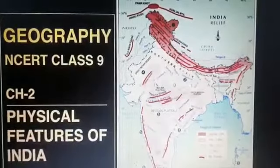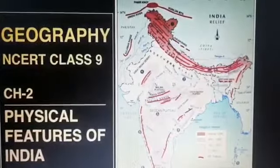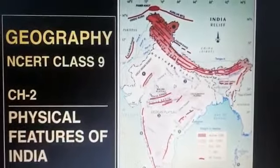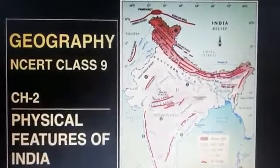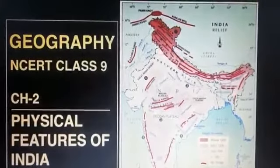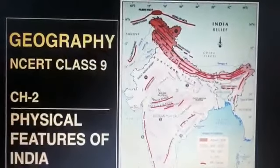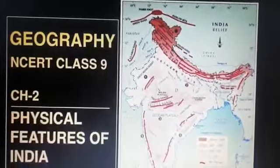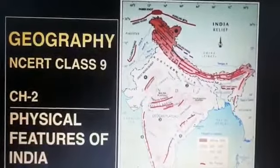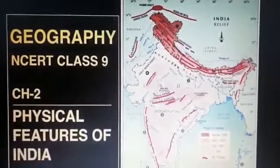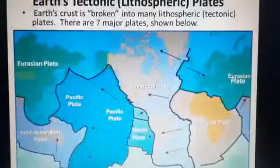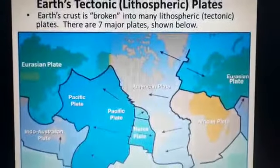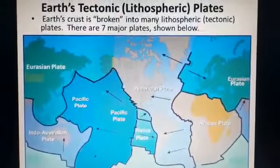We have already learned in the previous chapter that India is a vast country with varied landforms. We have already discussed that our country has practically all major physical features of Earth.